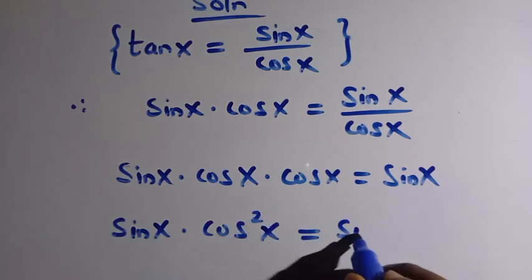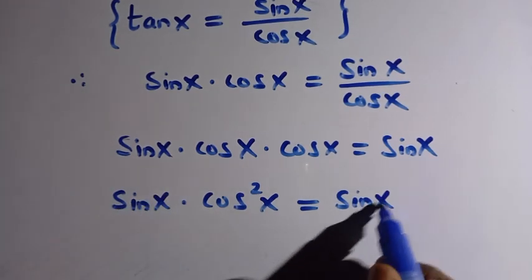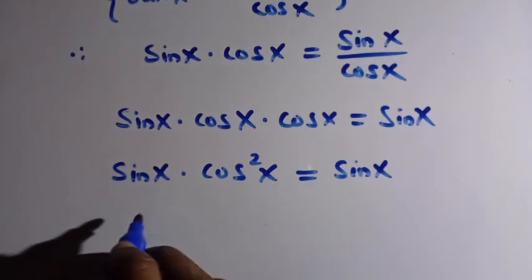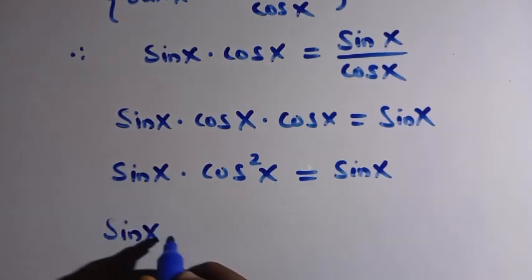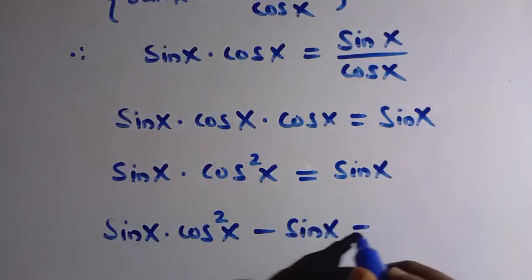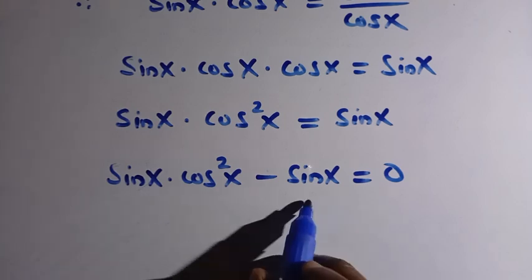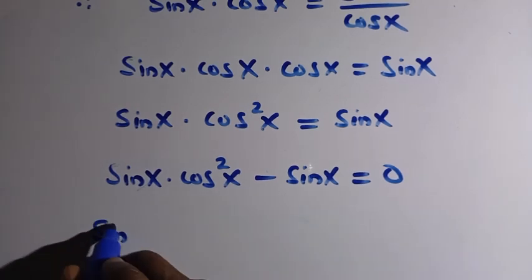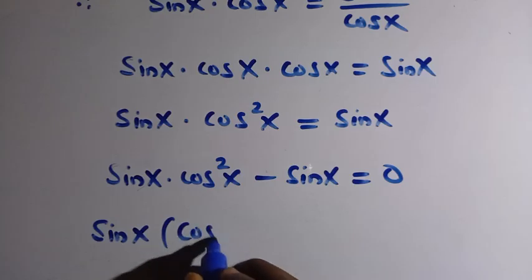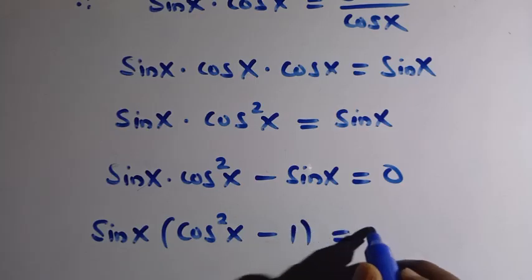At this point, canceling sine x from both sides would be a very wrong step. Instead, we transfer sine x to the left side, giving us sine x times cos squared x minus sine x equals zero. We then factor out sine x, leaving us with sine x times (cos squared x minus 1) equals zero.